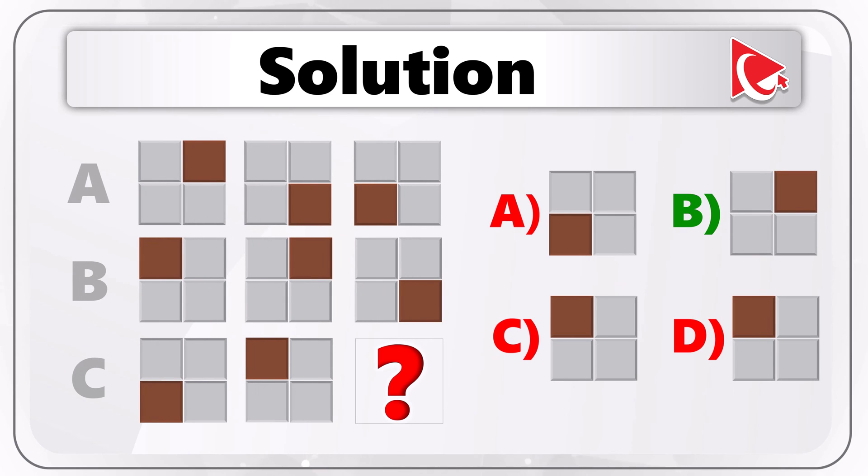Once we've determined the pattern, we know how to solve this challenge. The correct answer here will be choice B, where the next darker square will be in the upper right corner.